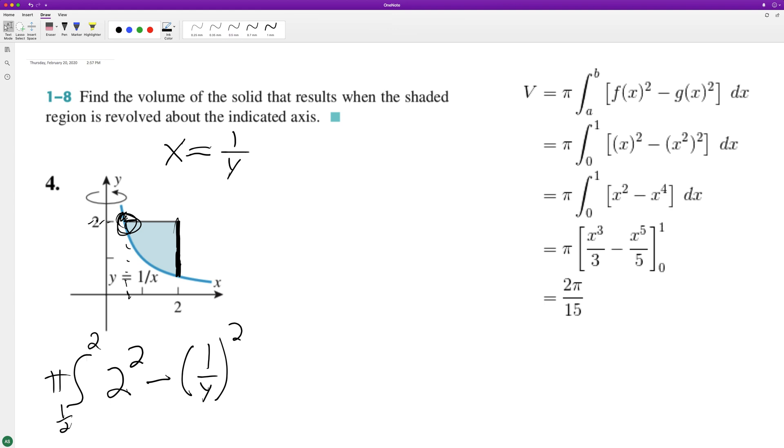Okay, so go ahead and integrate this. We end up with pi, and then this is four y minus one over y squared - and actually it becomes plus because the negative value's pulled out.